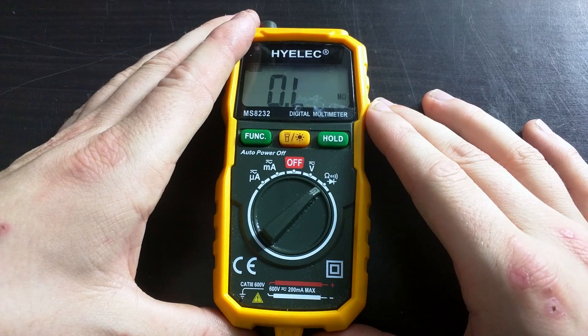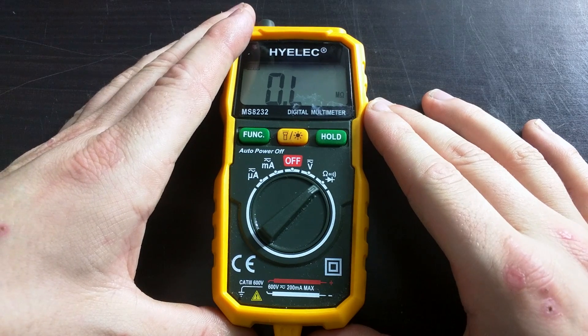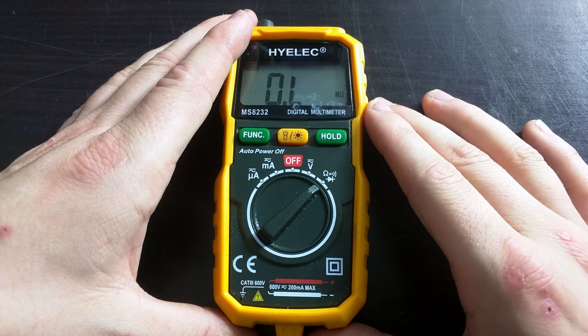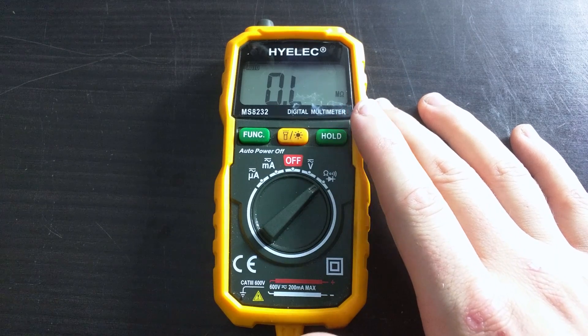However, this multimeter will automatically select the range for me. So if I measure a certain resistance, it will change its display to show the result accurately.